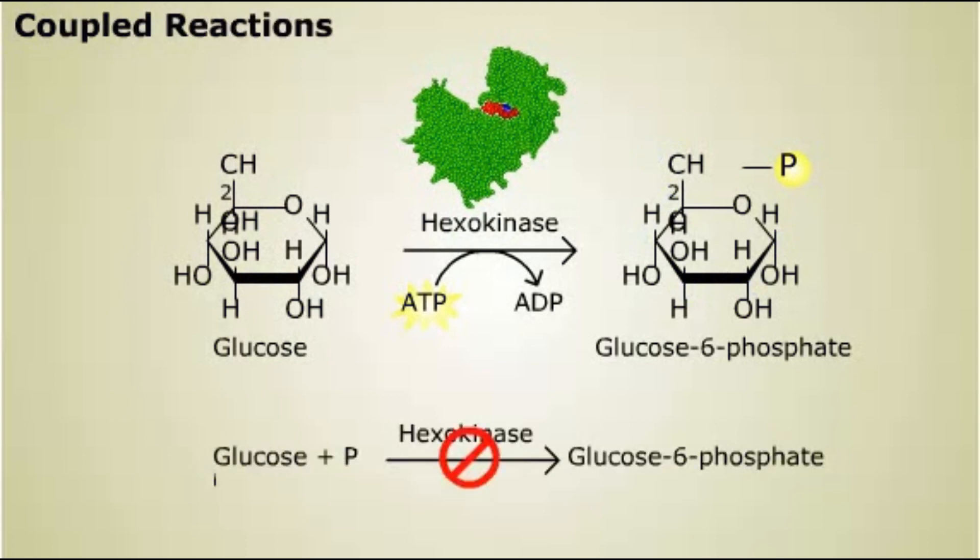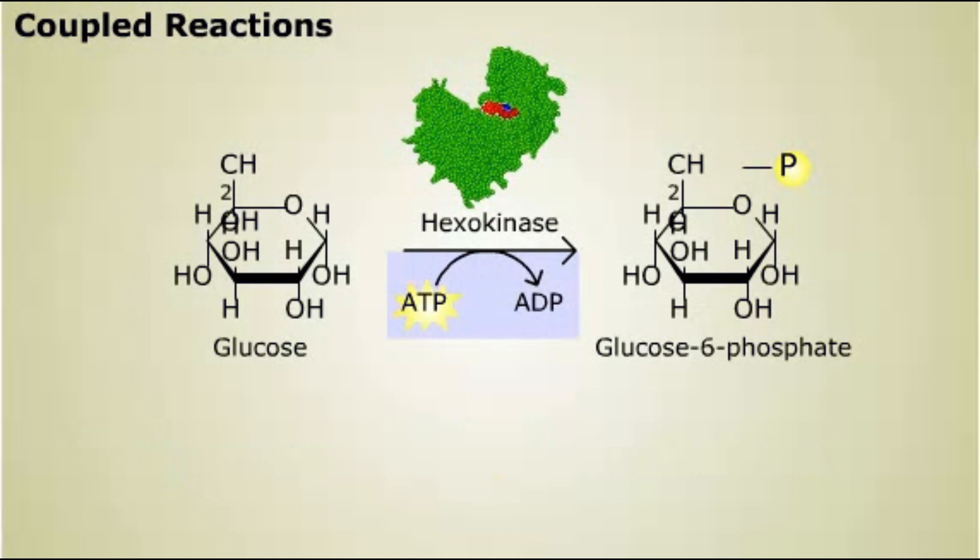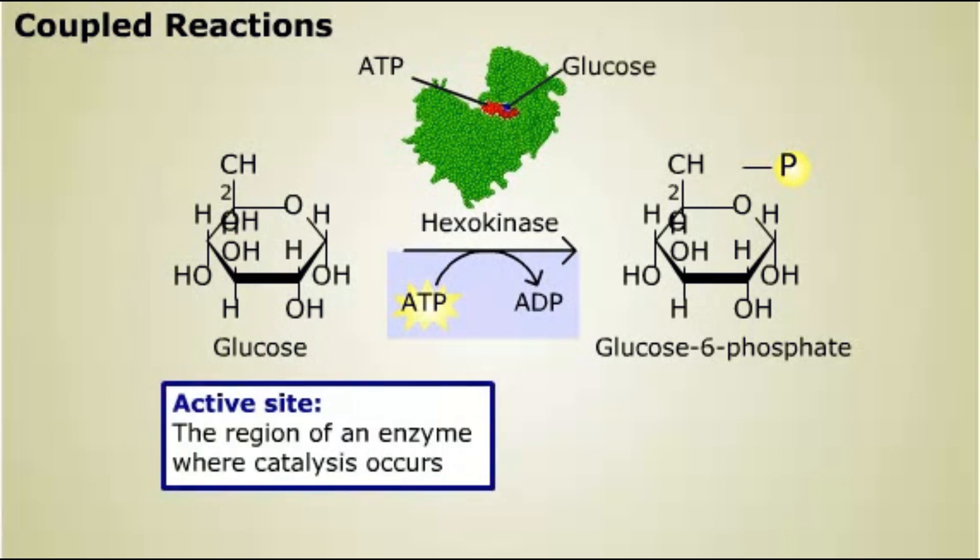Hexokinase can't phosphorylate glucose directly because the free energy change is positive. So it couples glucose phosphorylation to ATP hydrolysis. To couple these reactions, hexokinase has a binding site for ATP and another for glucose. This is the enzyme's active site where catalysis occurs.